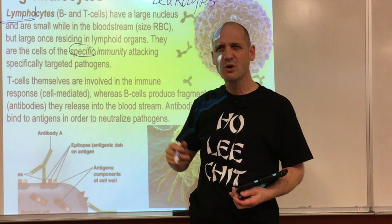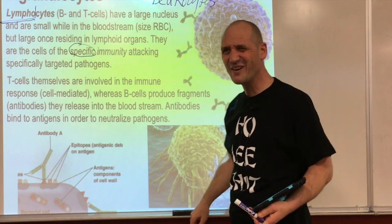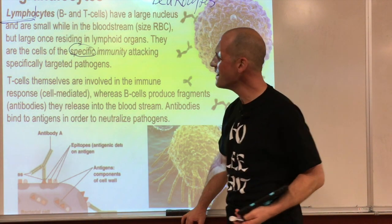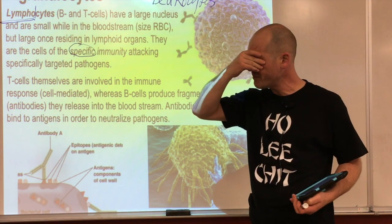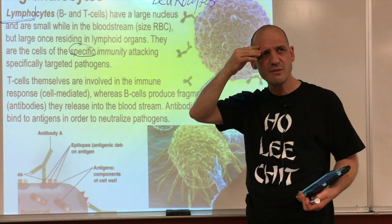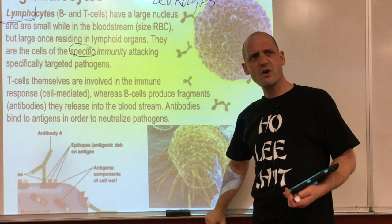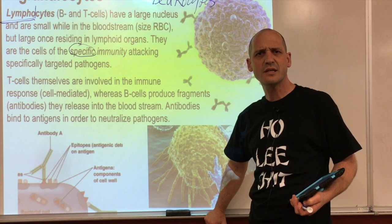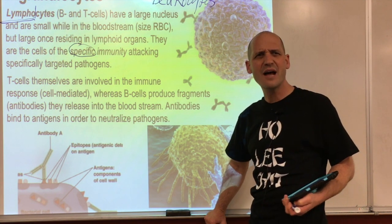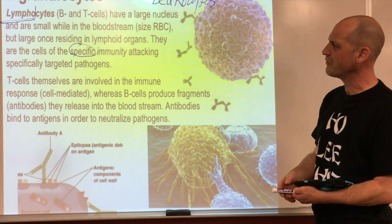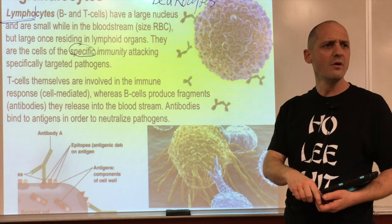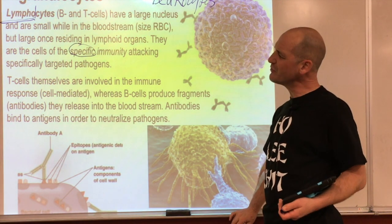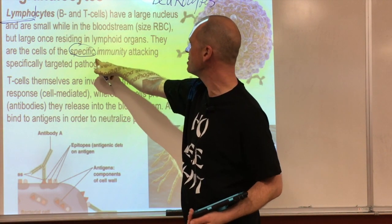Lymphocytes are the cells of specific immunity - they remember the chickenpox, the flu vaccine, whatever pathogen they've been exposed to or vaccinated against. They learn what the pathogen looks like. T cells are directly involved in the immune response - cell-mediated immunity. B cells make small antibody fragments they release into the bloodstream that bind to pathogens, clumping or tagging them.